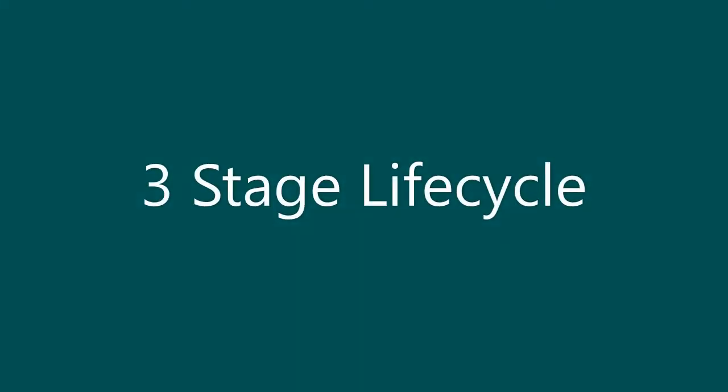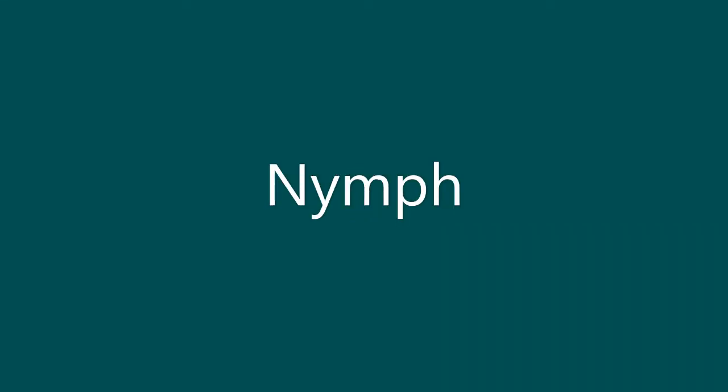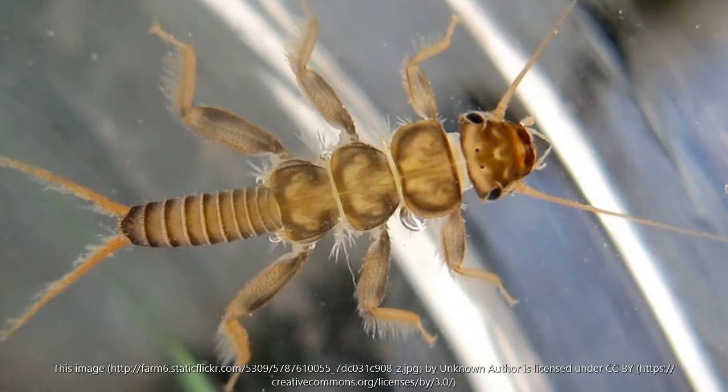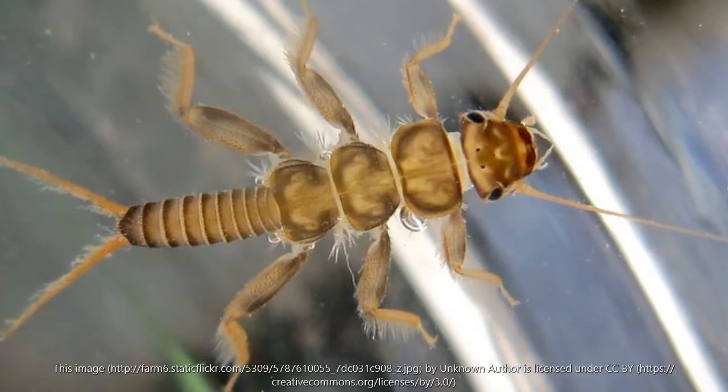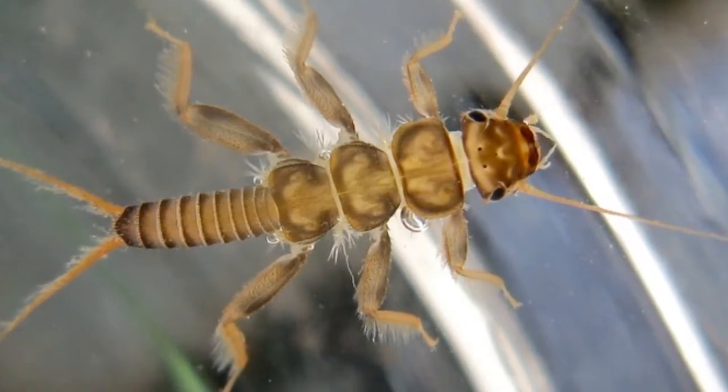The other is the three-stage life cycle, otherwise known as incomplete metamorphosis. The three stages are egg, nymph and adult. When the young hatches, they look similar to the adult, except they're smaller and don't have wings.